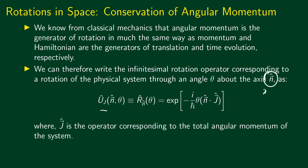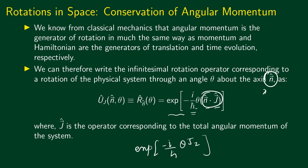So we can write U hat of n hat comma theta — where n hat is the axis of rotation and theta is the angle — as exponential minus i by h bar times theta times n hat dot J hat. Here J hat is the total angular momentum of the system, which includes both orbital angular momentum and spin. For example, for a rotation about the z direction, the corresponding unitary operator is exponential minus i by h bar times theta times J_z, the z component of the total angular momentum.